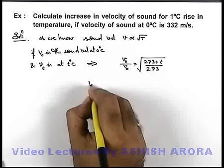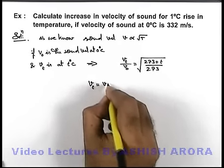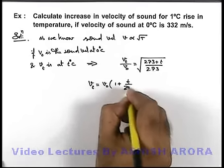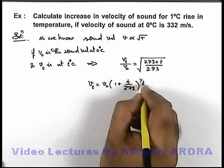From here, the velocity of sound at t degree centigrade we can write as v not into 1 plus t by 273 to power half.